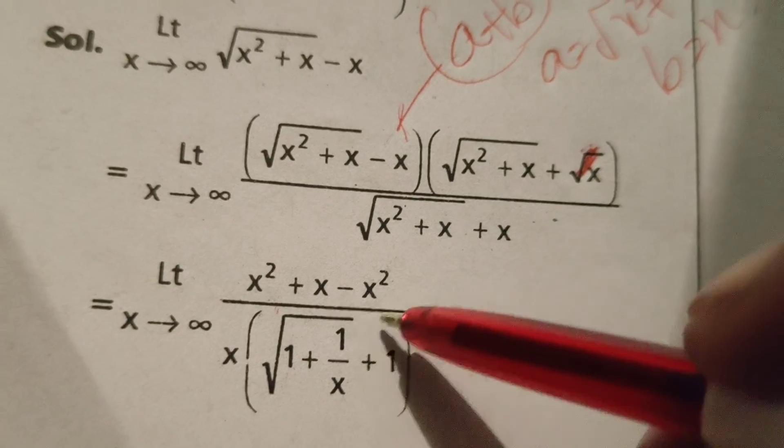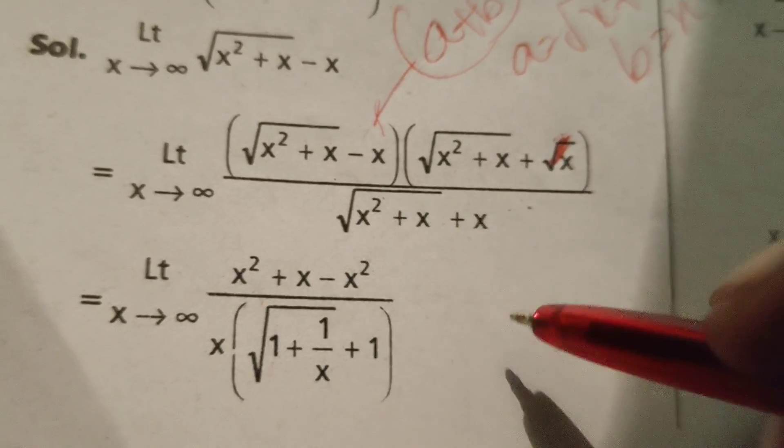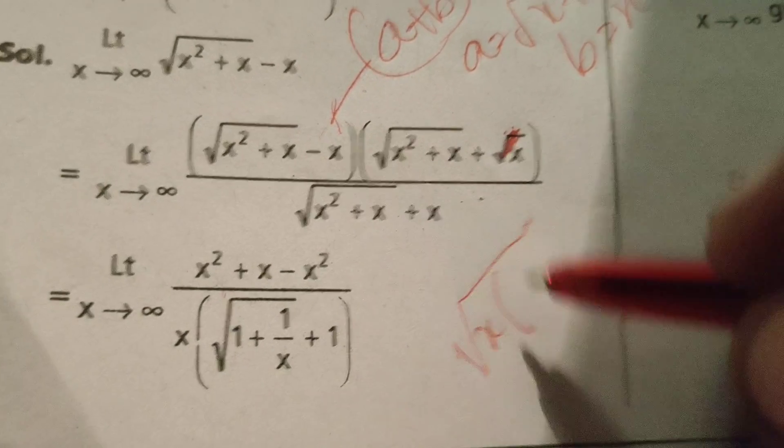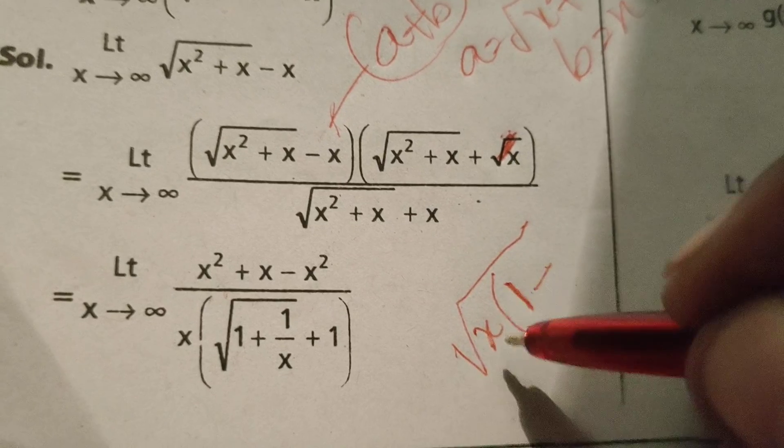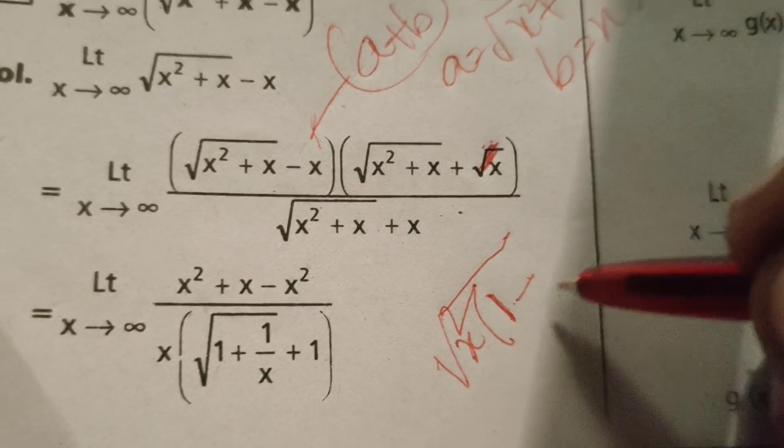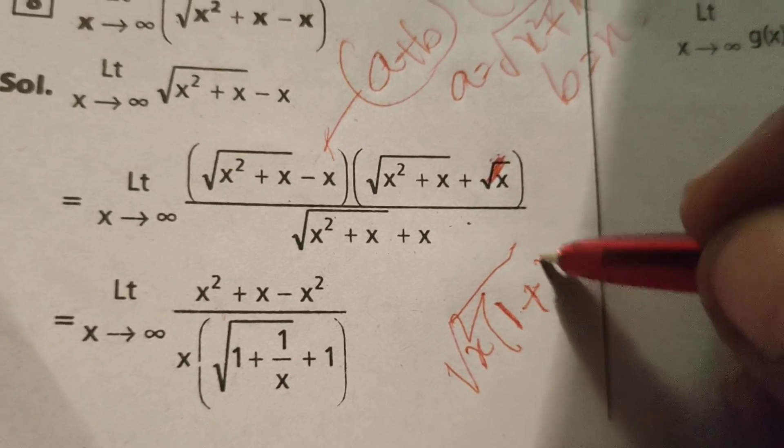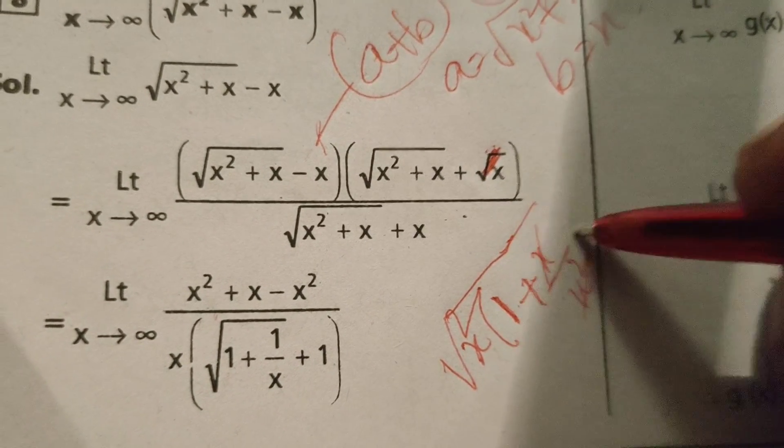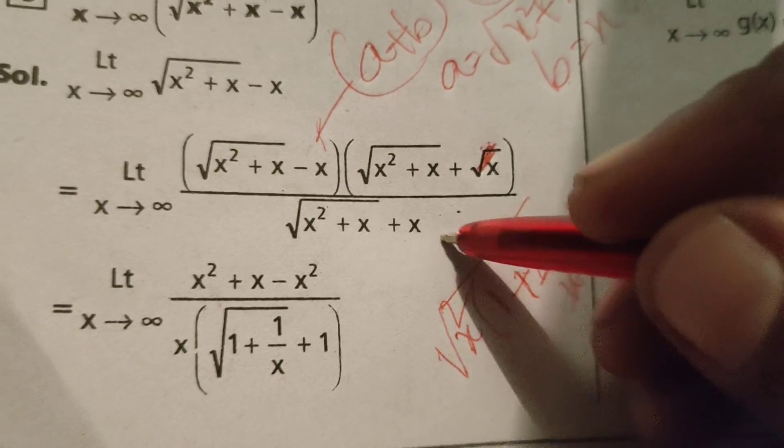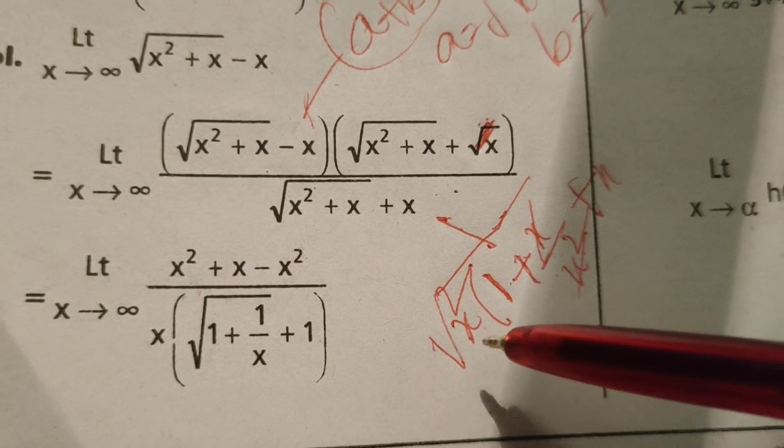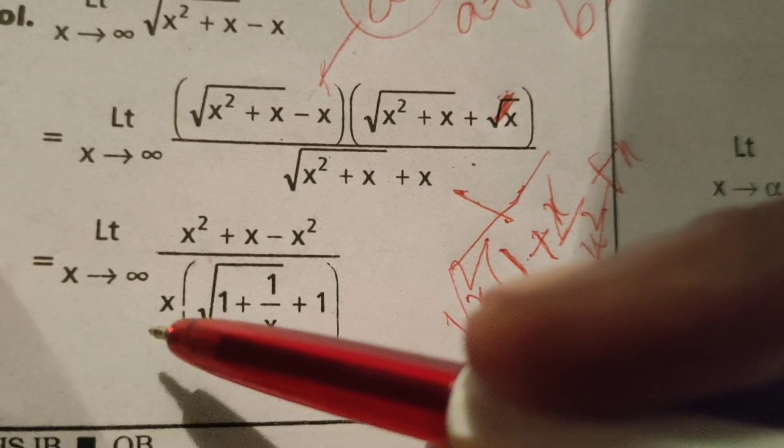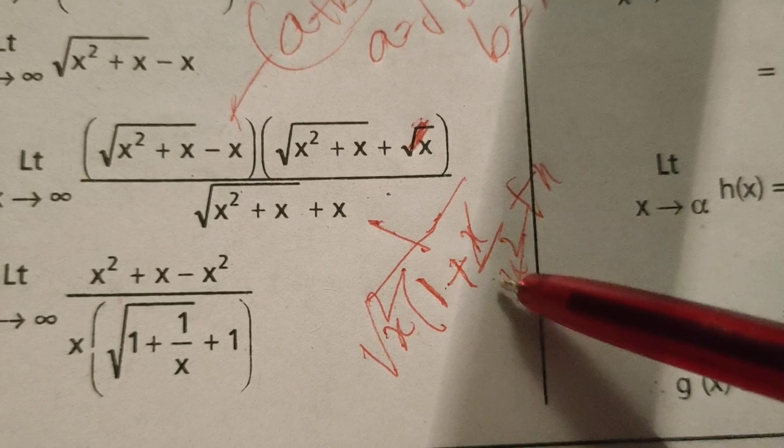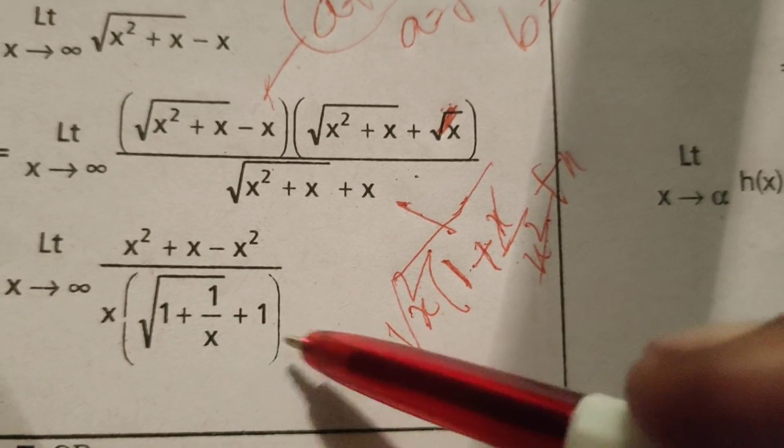This can be written as x into, your denominator written as x into 1 plus x by x square. Here 1 by x plus x. Therefore here removing the root means this x square. This x square means x. This is root of 1 plus 1 by x plus 1.